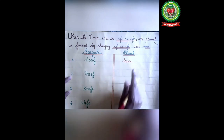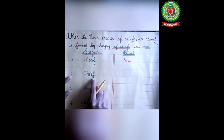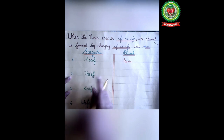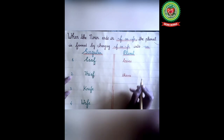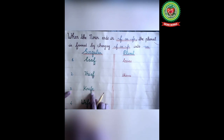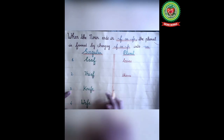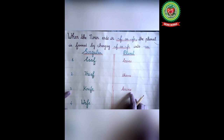Let's take more examples. 'Thief' — the singular noun ends with F, so we make it plural by adding VES: thieves. 'Knife' — again, the singular noun ends with F, and its plural is knives.